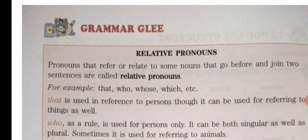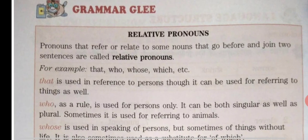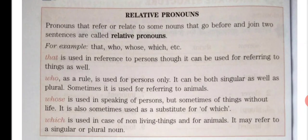Pronouns that relate or refer to some nouns that go before and join two sentences are called relative pronouns. Aise pronouns jo do sentences ko jodate hain aur relation dikhate hain — un dono ke beech mein relation ya phir unki taraf refer karte hain, unki taraf ishara karte hain — jisse pata chale ki yeh kisike hain, it belongs to someone or it relates to someone.